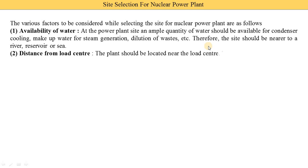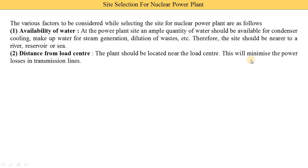The second factor is distance from load centers. Load centers means the places where electricity is supplied. In a nuclear power plant, we produce electricity and this electricity is supplied to load centers. The plant will be located near the load centers. This will minimize power losses in transmission lines. When the distance between the power plant and the electricity supply point is minimum, transmission losses and transmission line initial cost are reduced.